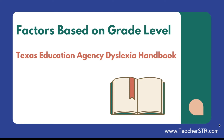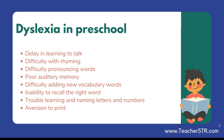The STR test scorers expect you to have an understanding of the reading factors based on grade level, as written by the Texas Education Agency Dyslexia Handbook. The information shares common factors associated with students who may have dyslexia at different grade levels. For students in preschool, you may notice the following signs: delay in learning to talk, difficulty with rhyming, difficulty pronouncing words such as 'paschetti' for spaghetti, poor auditory memory for nursery rhymes and chants, difficulty adding new vocabulary words, inability to recall the right word — which is called word retrieval — trouble learning and naming letters and numbers, and remembering the letters in the student's name.